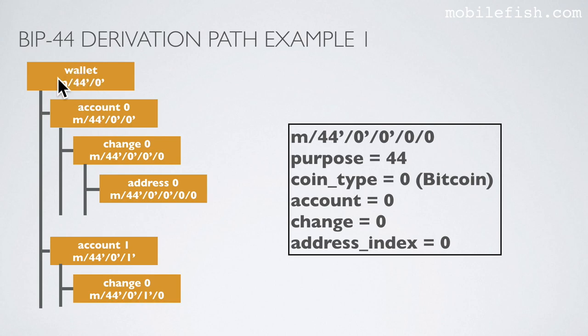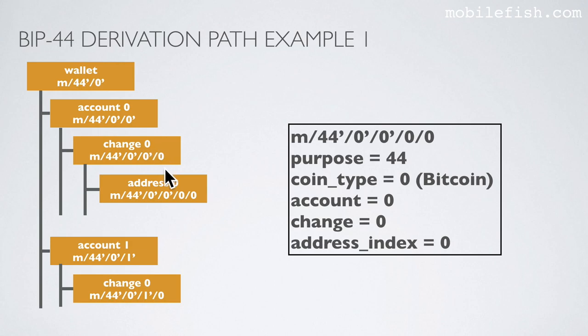If you look here, this is the start of the wallet. This wallet is a Bitcoin wallet which complies to Bitcoin Improvement Proposal 44. This is account 0, this is account 1, and so on. Below account level 0 we start with change level 0, and below change level 0 we can create addresses.